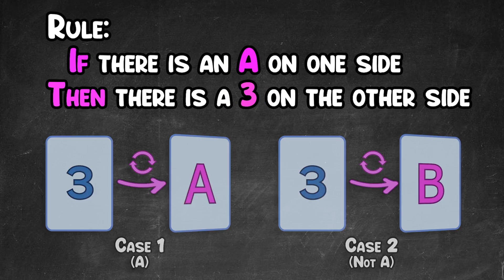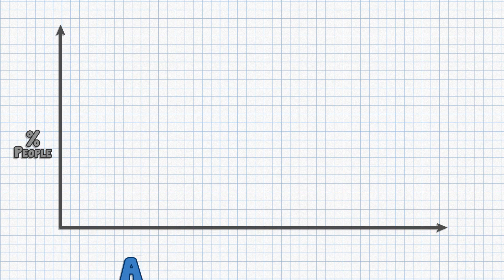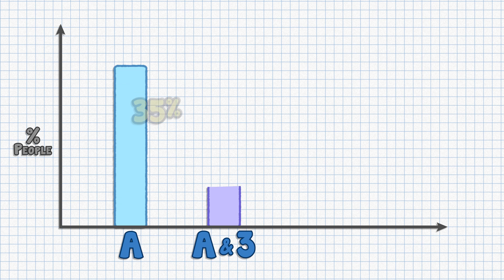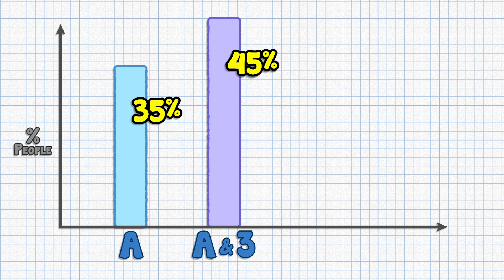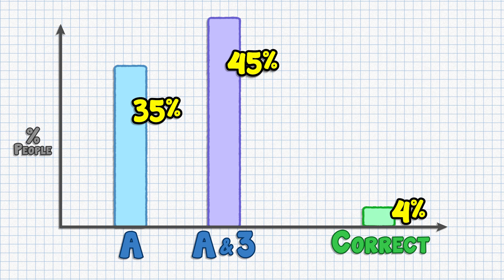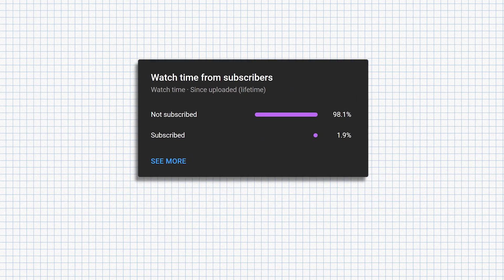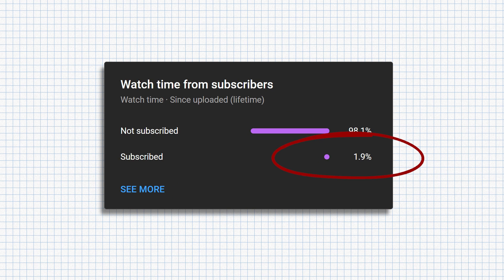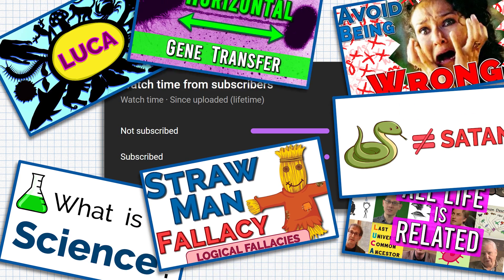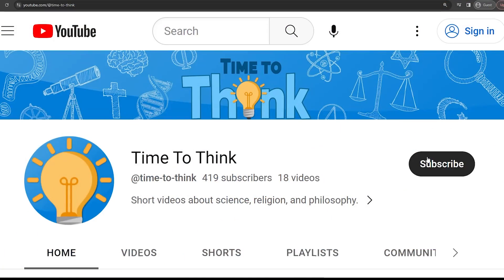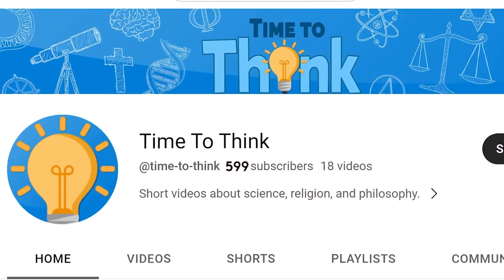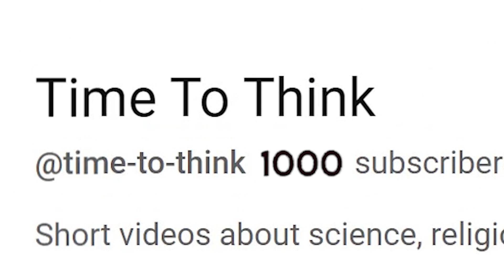But don't worry, 80% of people make the same mistake of choosing only the A card, or choosing the A and the 3 card. In one study, only 4% of people got the right answer. Which is super teeny, but still double the percentage of people that watch my videos and are subscribed to my channel. So if you enjoy my videos and want to see more of them, please consider subscribing to my channel. I would love to get to 1000 subscribers, and I'll need your help to reach my goal.